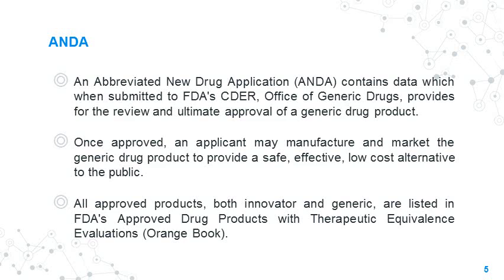For a generic drug, one has to file an abbreviated new drug application or ANDA with the US FDA. An ANDA contains data which, when submitted to FDA's CDER Office of Generic Drugs, provides for review and approval of a generic drug product. Once approved, the applicant may manufacture and market the generic drug product to provide a safe, effective, low-cost alternative to the public. All such approved products, both the innovator and the generic, are listed in FDA's approved drug products with therapeutic equivalence evaluations, also called the orange book. Generic drug applications are termed abbreviated because they are generally not required to include clinical and preclinical data to establish safety and effectiveness. Instead, they are required to scientifically demonstrate that their product is bioequivalent — that is, the generic drug performs in the same manner as the innovator drug.